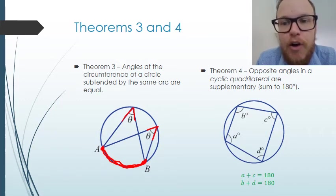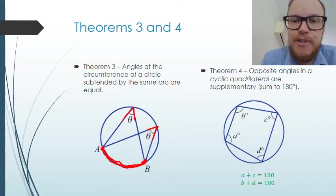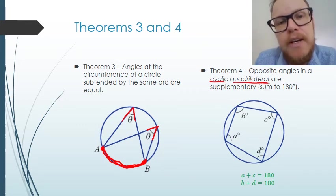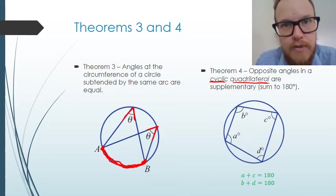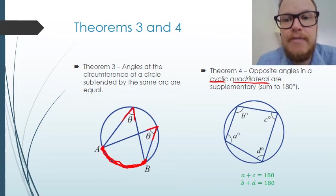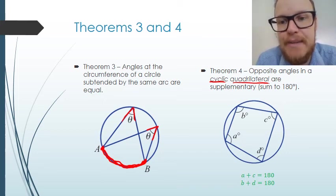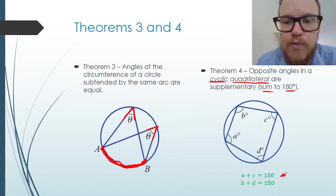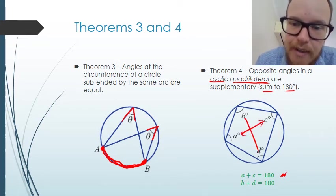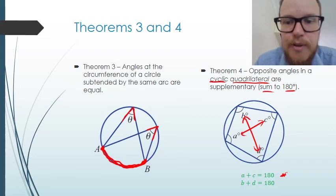Theorem four states that the opposite angles in a cyclic quadrilateral are supplementary. A cyclic quadrilateral is a four-sided figure that has each of its four vertices on the edge of a circle. The opposite angles are supplementary, meaning they sum to 180 degrees. So A plus C equals 180 and B plus D equals 180.